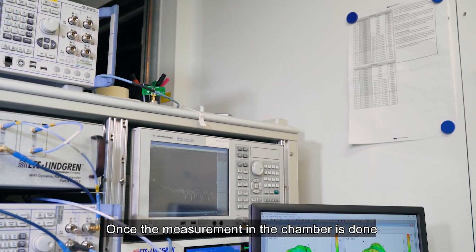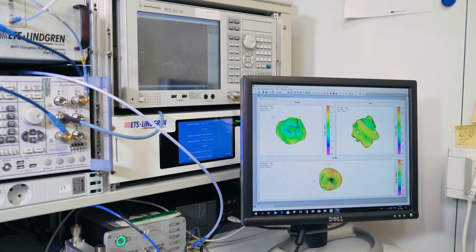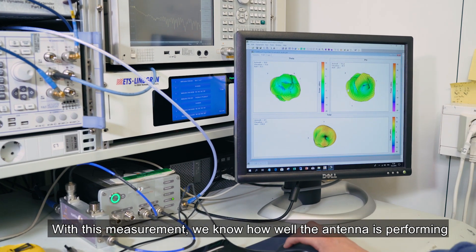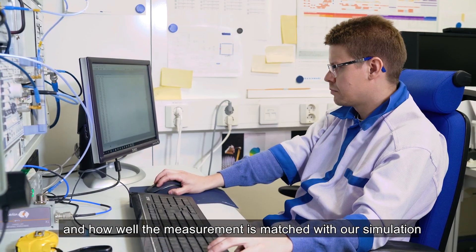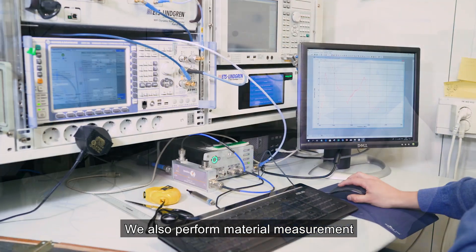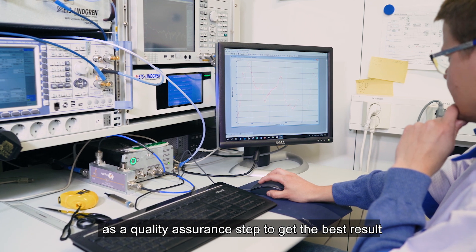Once the measurement in the chamber is done, we can see the result on the EM-Quest software. With this measurement, we know how well the antenna is performing and how well the measurement is matched with our simulations. We also perform material measurement as a quality assurance step to get the best result.